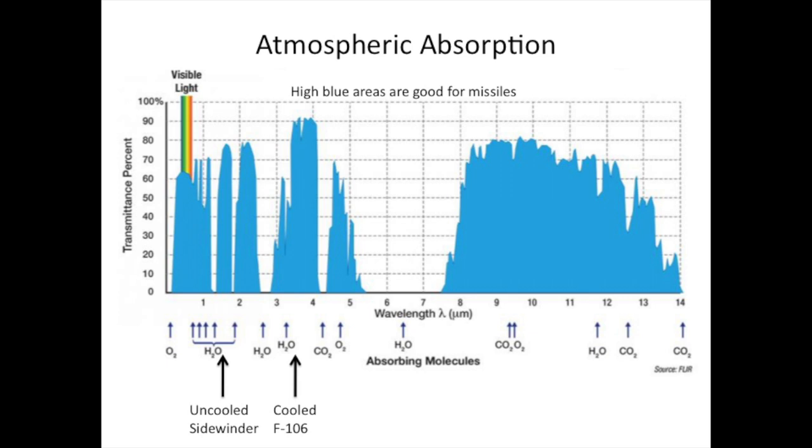The areas of low blue or no blue are areas where the atmospheric absorption prohibits the transmittal of light. At the left of the chart, in the visible and near visible light, there is a lot of natural clutter, which makes it bad for missile tracking.